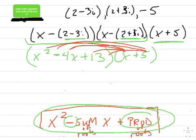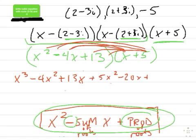So I'm going to have a total of six things. So I'm going to have x cubed minus 4x squared plus 13x. I distributed the x in, now the 5. Plus 5x squared minus 20x plus 65.